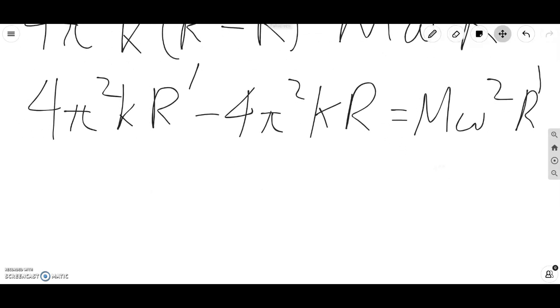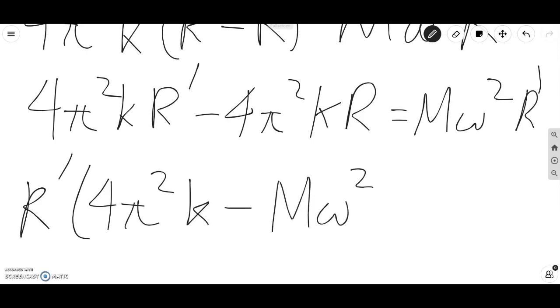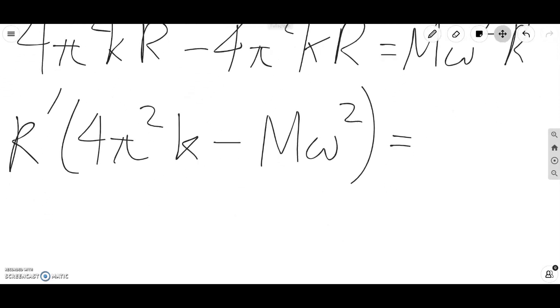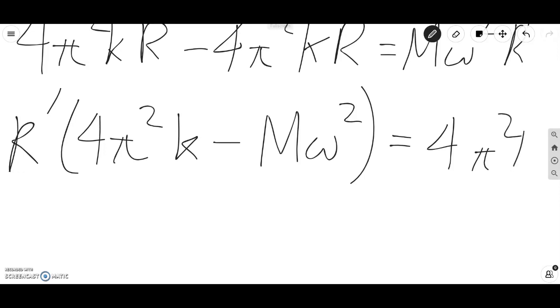And simplifying this further, we bring all the R prime terms to the left-hand side. We can factor out an R prime and we get 4 pi squared K minus m omega squared. That's the terms including R prime. And then now on the right-hand side, we have 4 pi squared K R.